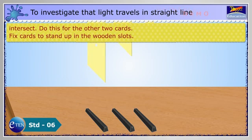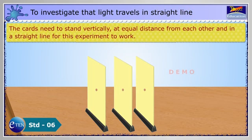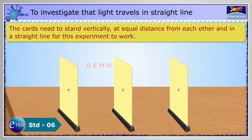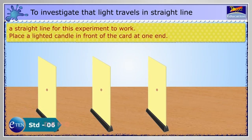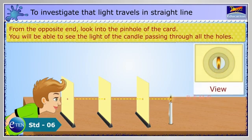Fix cards to stand up in the wooden slots. The cards need to stand vertically at equal distance from each other and in a straight line for this experiment to work. Place a lighted candle in front of the card at one end. From the opposite end, look into the pinhole of the card.